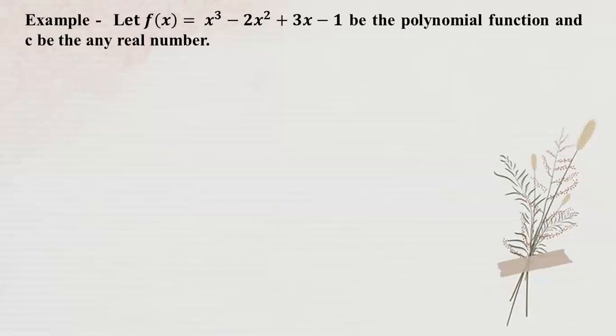Let f(x) equal x cubed minus 2x squared plus 3x minus 1. This function is a polynomial function. Polynomial function is continuous. This is the polynomial function concept.